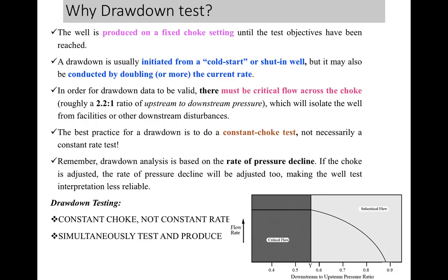The next thing to remember about drawdown is that it is based on rate of pressure decline. If the choke is adjusted, the rate of pressure decline will be adjusted too, making well test interpretation less reliable. This drawdown testing is also called constant choke testing, not constant rate testing. By maintaining a constant choke condition, you are trying to keep the rate constant; however, with time the rate may not be perfectly constant — it depends on downstream and upstream pressure. If upstream pressure goes down, the flow rate may change over time. This is the origin of the concept of multi-rate testing.